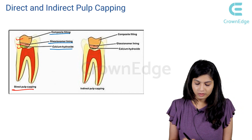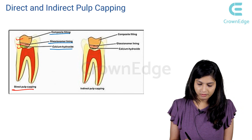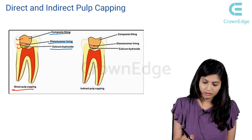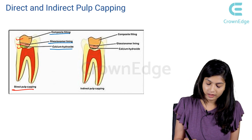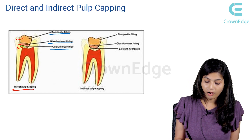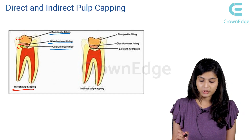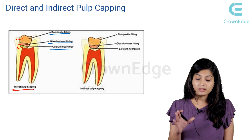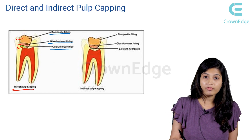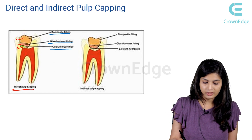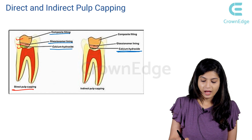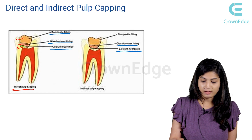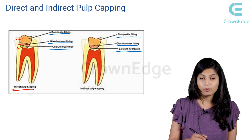In the indirect pulp capping picture, the caries is approaching the pulp tissue and the affected dentin is still present. On top of the affected dentin, calcium hydroxide medicament is placed, followed by glass ionomer lining, and then composite filling.